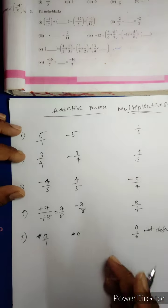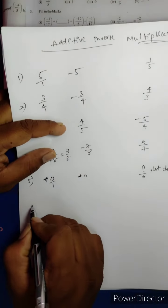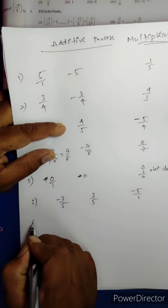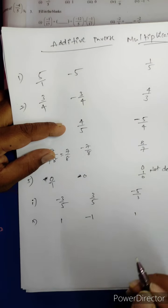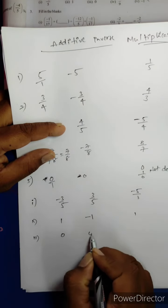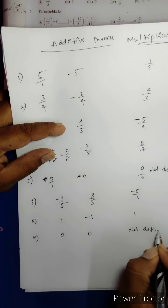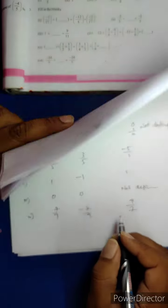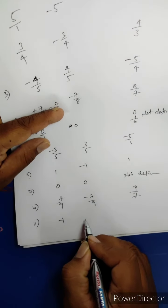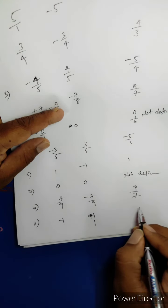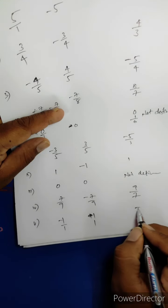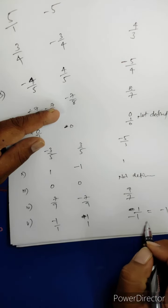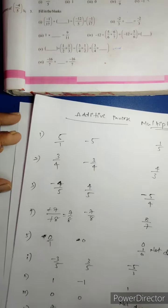Write the Additive inverse and Multiplicative inverse of the following. First: −3/5 — Additive inverse is 3/5, Multiplicative inverse is −5/3. Second: 1 — Additive inverse is −1, Multiplicative inverse is 1. Third: 0 — Additive inverse is 0, Multiplicative inverse is not defined. Fourth: 7/9 — Additive inverse is −7/9, Multiplicative inverse is 9/7. Fifth: −1 — Additive inverse is +1, Multiplicative inverse is 1/(−1).